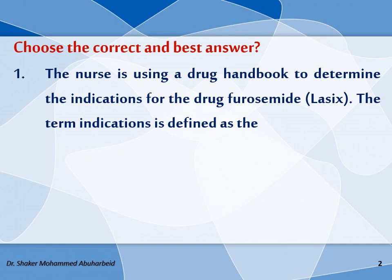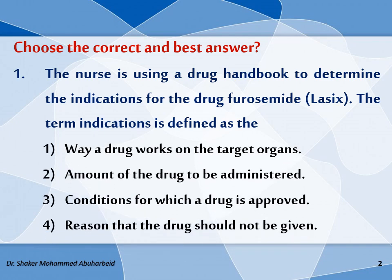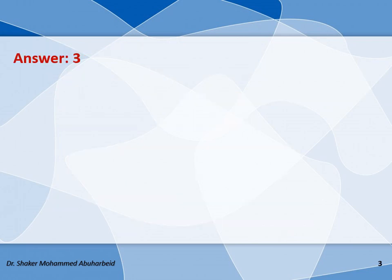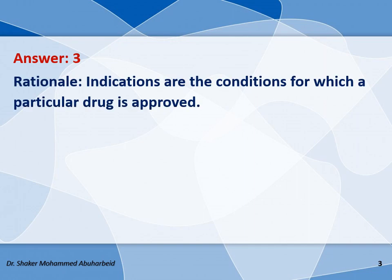Option 1: the way a drug works in the target organs. Option 2: the amount of the drug to be administered. Option 3: the conditions for which a drug is approved. Option 4: the reason that the drug should not be given. The correct and best answer is number 3 — indications are the conditions for which a particular drug is approved.